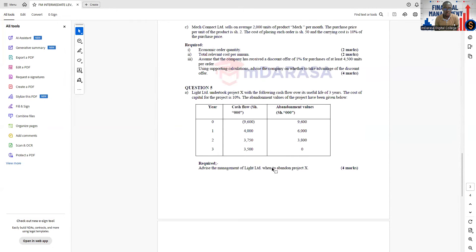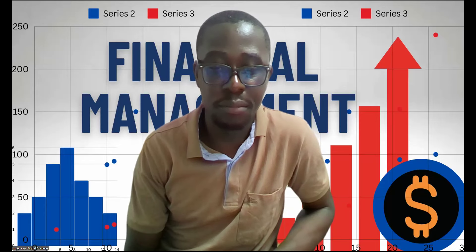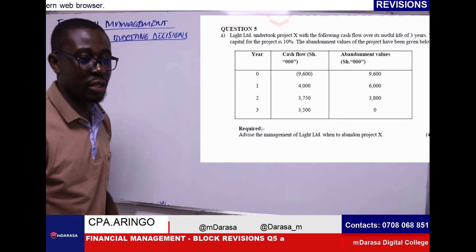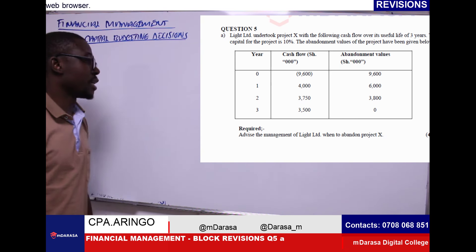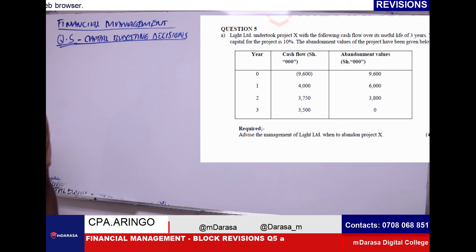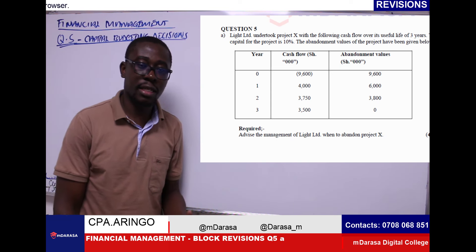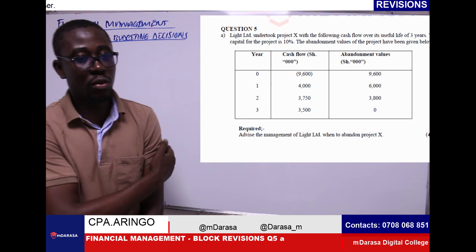So in our segment today, I just want us to look at question number five. In the last class, we had looked at question number four, which was covering two areas: financial forecasting and analysis, and also working capital management.